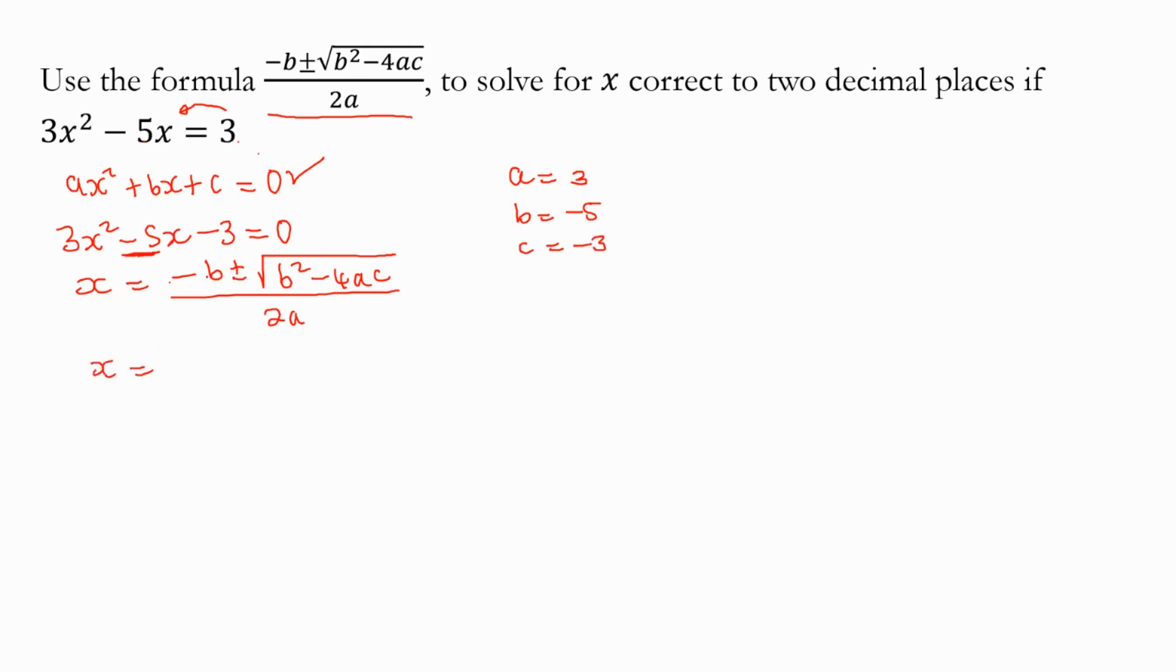Let's substitute. So x is equal to negative b, our b is negative 5 so it's going to be negative negative 5, then plus or minus the square root of b squared, negative 5 squared, minus 4, a is positive 3, then c is negative 3, then all this over 2 times a which is 3.